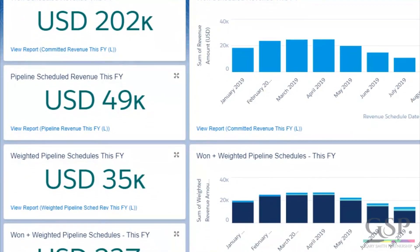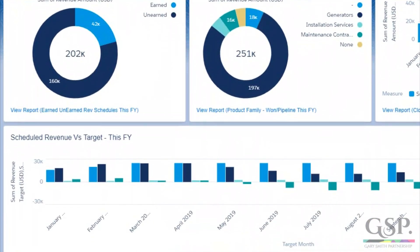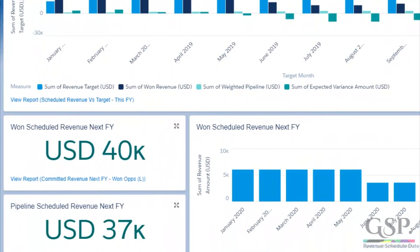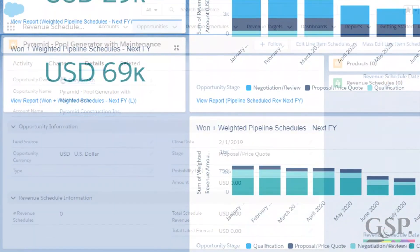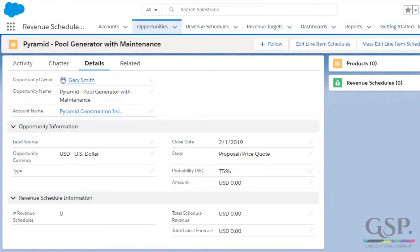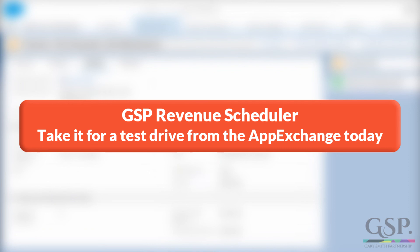Naturally, the app comes with a comprehensive dashboard. You can clone and adapt these reports and dashboard charts to meet your own specific reporting requirements. So that's the GSP Revenue Schedules app demoed in the Lightning Edition — it's fully Classic enabled too. Take a test drive today, or get in touch with me to talk about any revenue scheduling requirements unique to your business. Good luck.